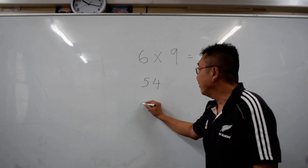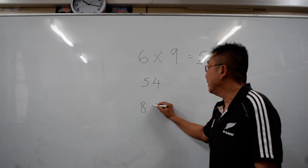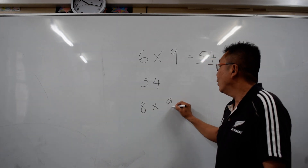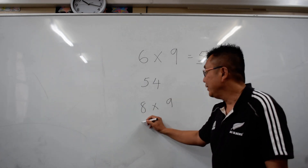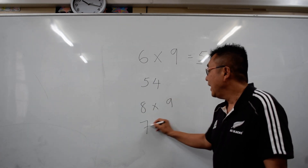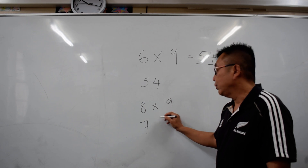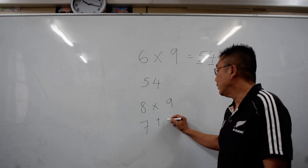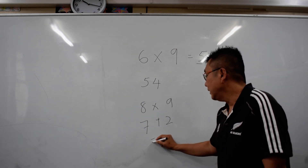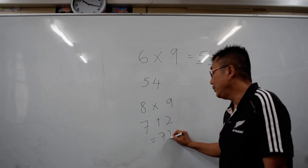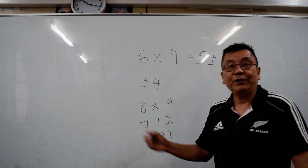The next one is 8 times 9. The digit that is less than 8 is going to be 7. And to make up to 9, you have to put a 2. So the answer is 72. That is straightforward.